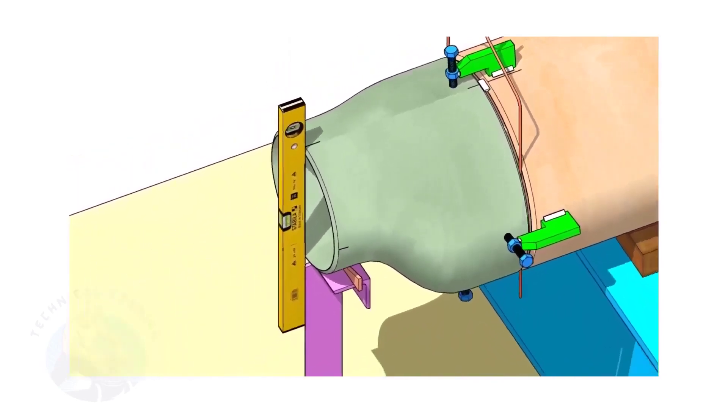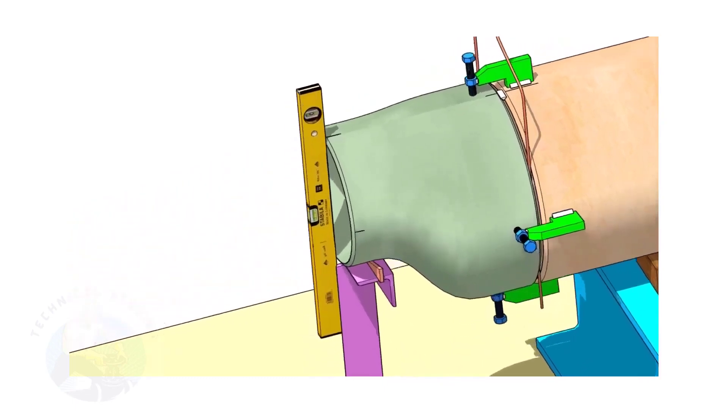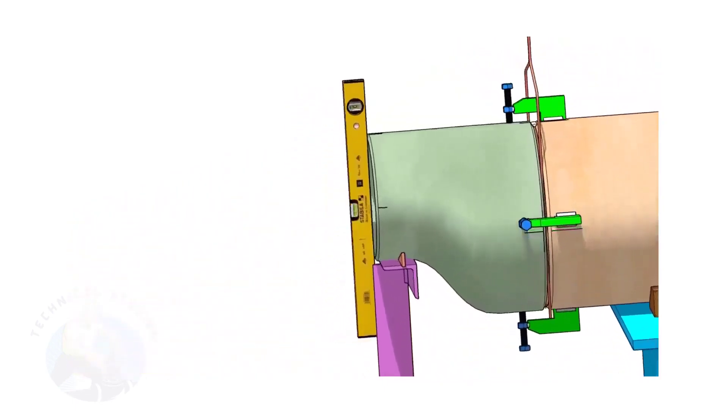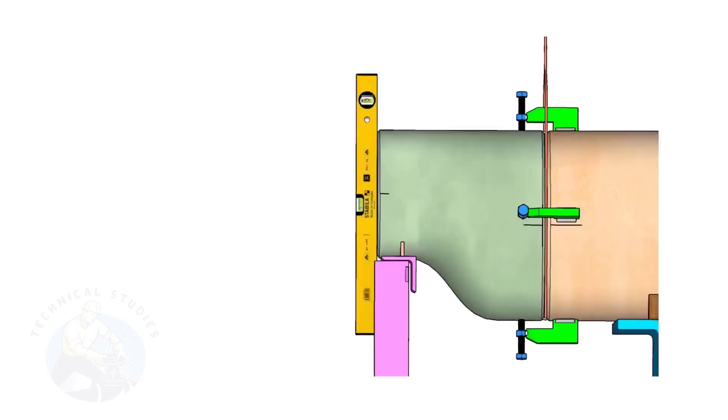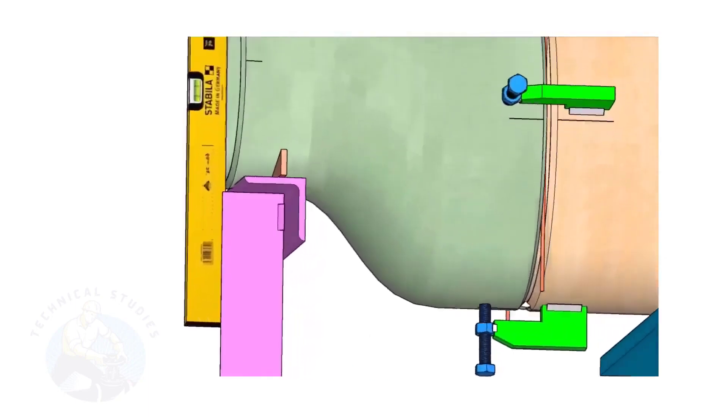Correct the levelness of the outer face of the reducer. Tack weld in the bottom side of the joint.